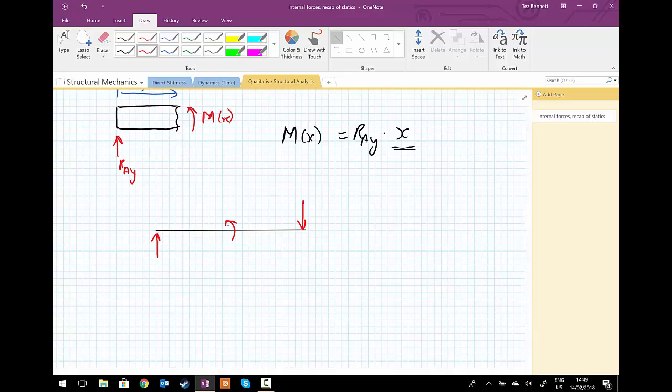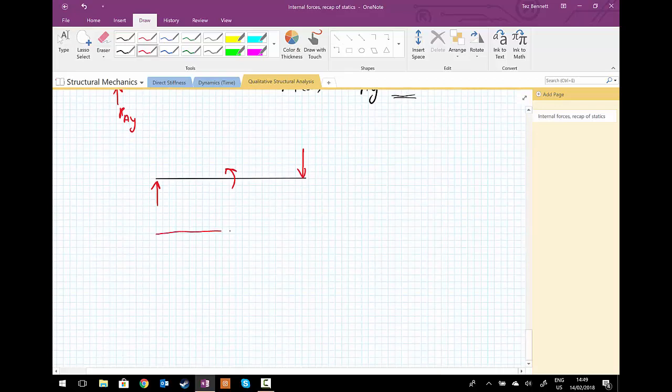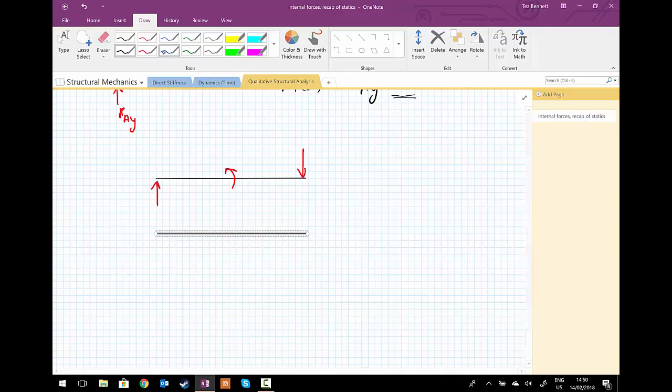Now as a result of this we're going to try to draw what the deformed shape is. So as a result of this loading, this load is pushing upwards and that means that the beam is going into tension on this side.